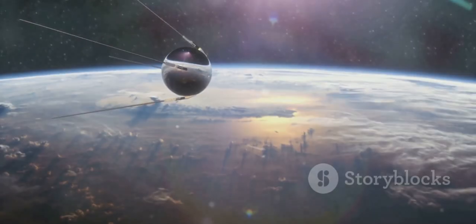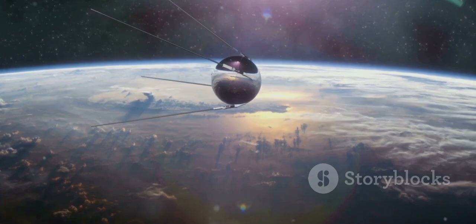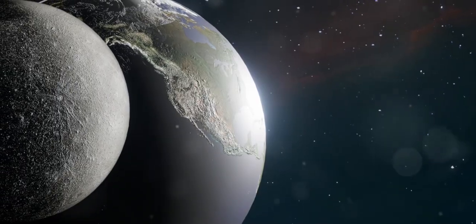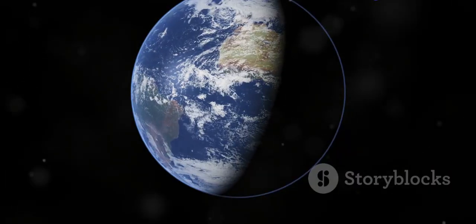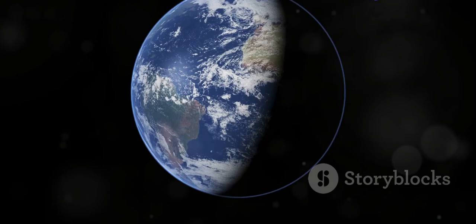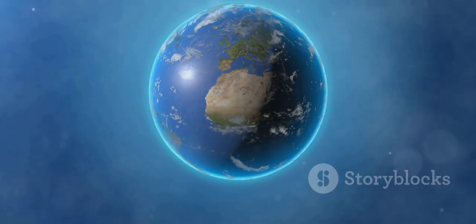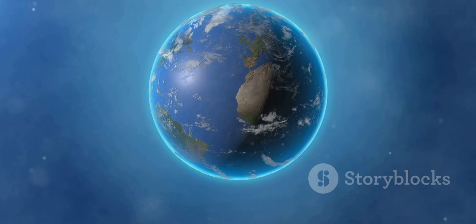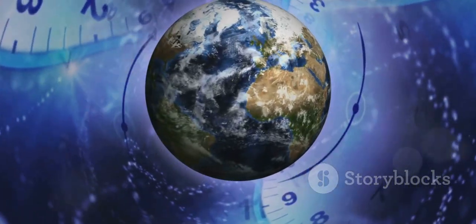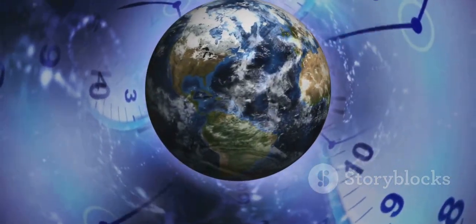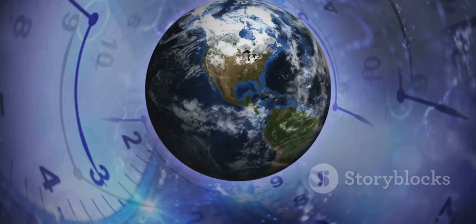So, what could cause Earth to become tidally locked? The answer lies in the unseen force of gravity. The Moon's gravitational pull tugs at Earth, creating a bulge on the side closest to the Moon. This bulge creates friction against Earth's rotation, gradually slowing it down. Over billions of years, this gentle tug could turn into a significant drag.